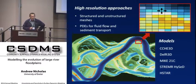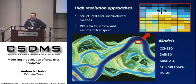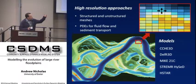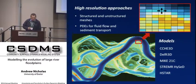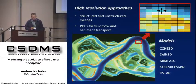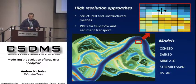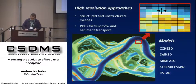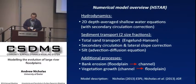On the right hand side we've got models applied at much smaller time and space scales that do have a hydrodynamic driver and think about processes such as overbank sedimentation or channel morphodynamics. Putting those ingredients together lets us think about feedbacks between channel and floodplain processes within the channel belt. I want to start with what I call a higher resolution approach — although having seen the St. Anthony Falls modeling yesterday, my ideas about high resolution have been slightly revised. There are a whole range of such models, implemented on structured or unstructured meshes, solving partial differential equations for fluid flow and sediment transport.